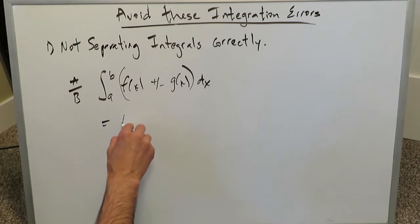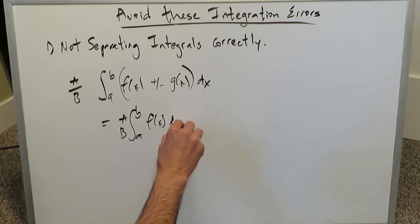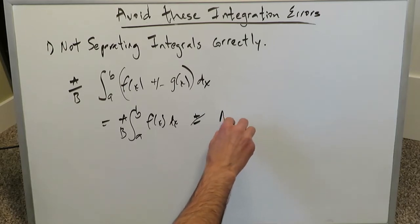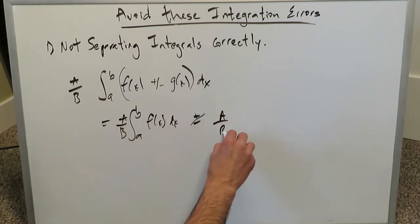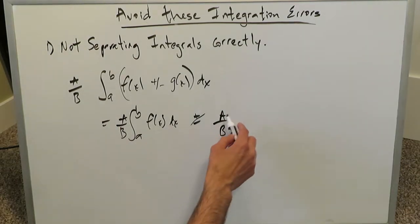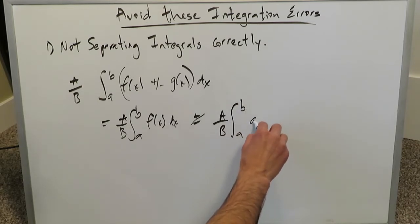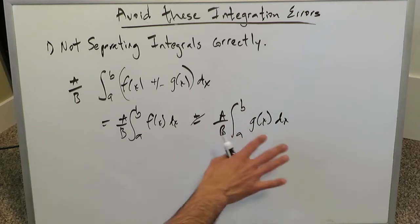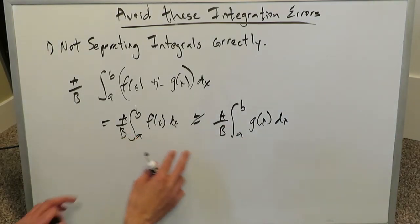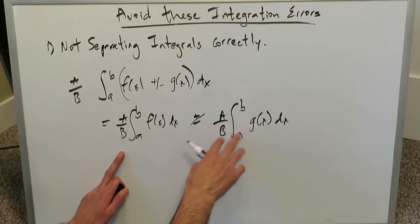If you open this up, you would have a over b with an interval from a to b of f(x) dx, then you create a new integral — plus or minus — and you have to bring in your coefficient a or b (it could be a fraction or a non-fractional coefficient), again from a to b of g(x) dx. Everything has been separated cleanly with plus or minus in between. The mistake to avoid is forgetting to bring a coefficient along with the remainder part of your expression.